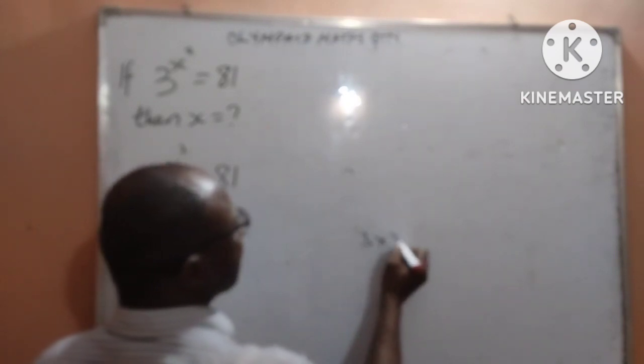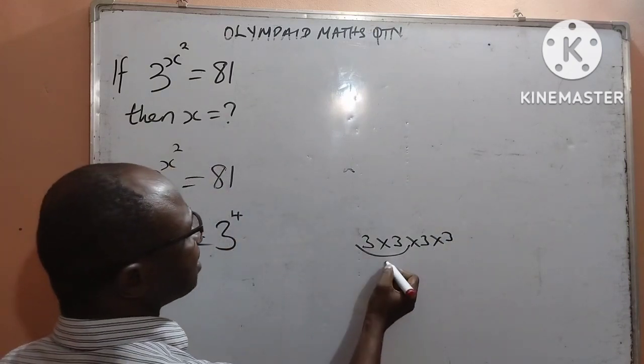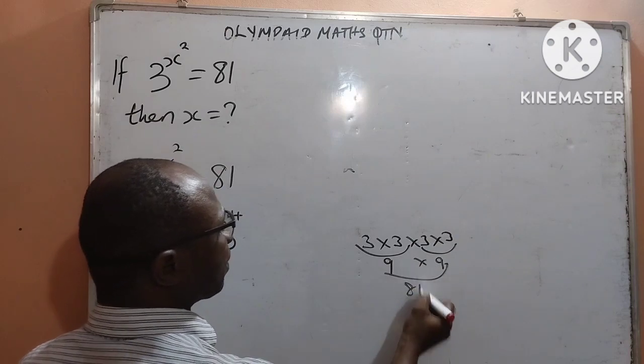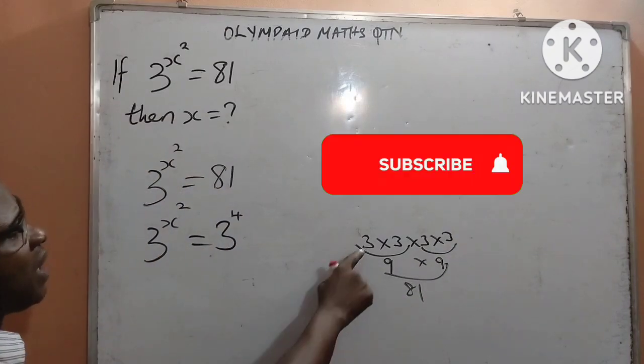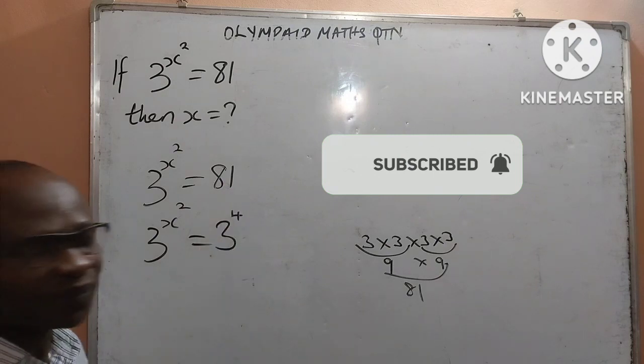Because 3 multiplied by 3 multiplied by 3 multiplied by 3, 4 times. That is 3 times 3 is 9 and 3 times 3 is 9, and 9 times 9 will give me 81. So that is why we expressed our 81 as 3 to the power of 4.